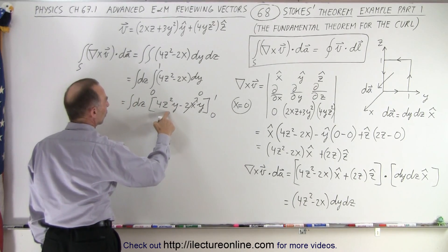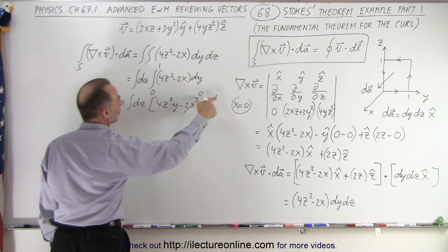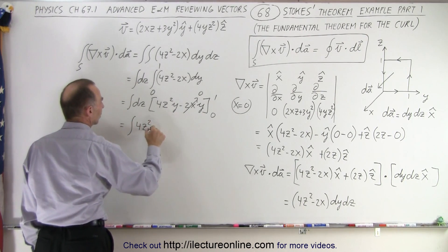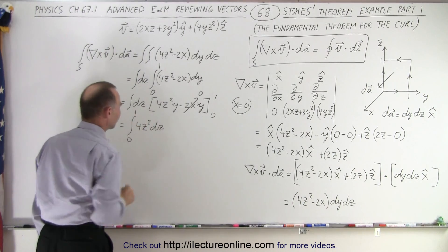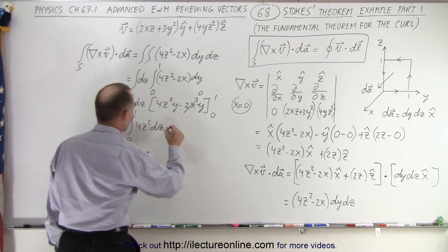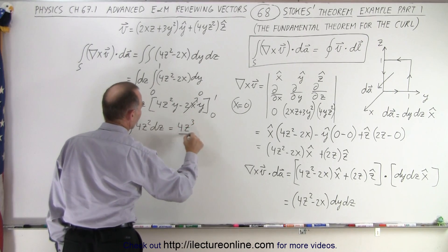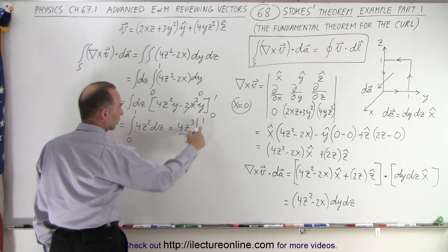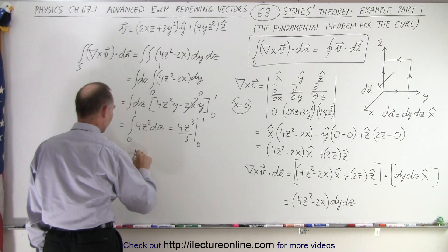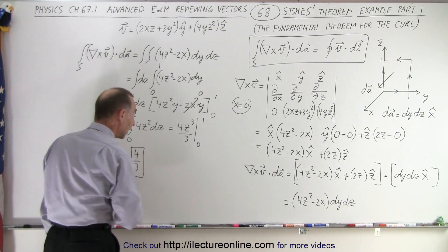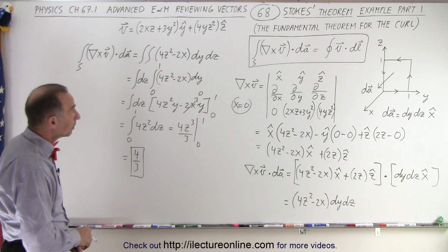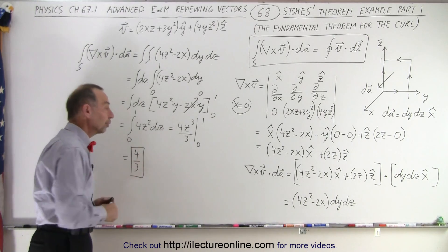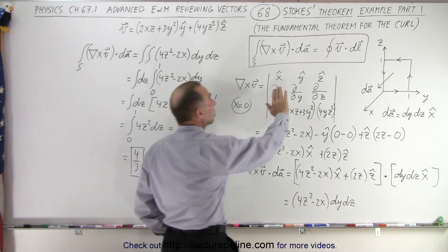Since x = 0, the 2x term disappears. Plugging in y = 0 gives nothing; plugging in y = 1 gives 4z². This becomes the integral of 4z² dz from 0 to 1, which equals 4z³/3 evaluated from 0 to 1. Plugging in the lower limit gives nothing; plugging in the upper limit gives 4 times 1/3, which is 4/3.